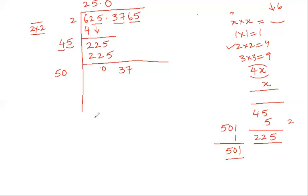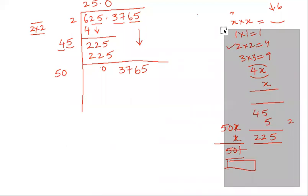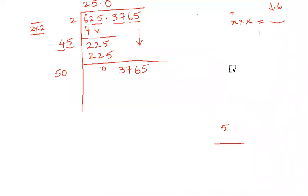Once you add 0 here, then you are allowed to bring down the other pair also, 65. Now you think of dividing 3765 by 50 something multiplied by something. That number should be little less or equal to 3765. Let's do that. So we get 50.